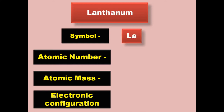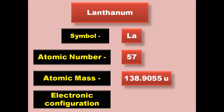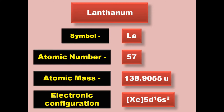Lanthanum has symbol La, atomic number 57, atomic mass 138.9055, electronic configuration [Xe] 5d1 6s2. Lanthanum is a lanthanide and exists in solid form at room temperature.